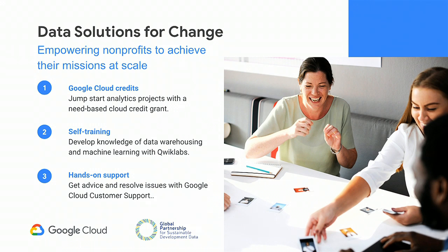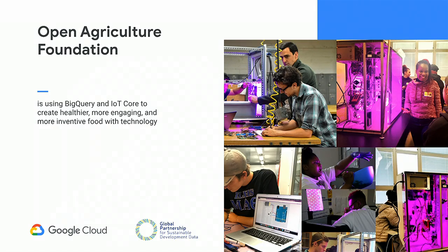While this program just launched in 2018, we're already seeing a variety of nonprofits applying these solutions in really interesting ways. One of them is the Open Agriculture Foundation, where they're using BigQuery and IoT Core to create healthier, more engaging, and more inventive food with technology. They've developed proprietary food computers, looking at plant recipe codes and different variables to understand, for example, how a basil plant responds to a certain humidity level versus lettuce.